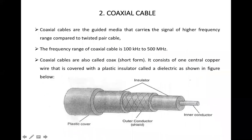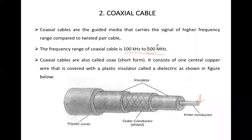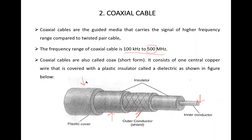The next type is coaxial cable. Coaxial cable has a larger gauge — the diameter of the copper conductor is more. The frequency range is also more: 100 kHz to 500 MHz, compared to the maximum of 5 MHz for twisted pair cable. The structure of coaxial cable consists of inner copper conductor, then insulator, then outer shield (also a conductor), then insulator, and finally a plastic jacket. The coaxial cable is also called coax.